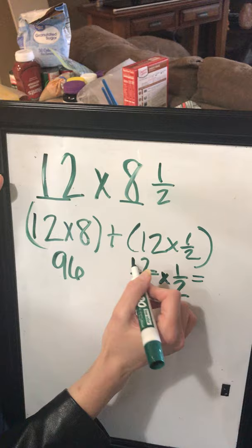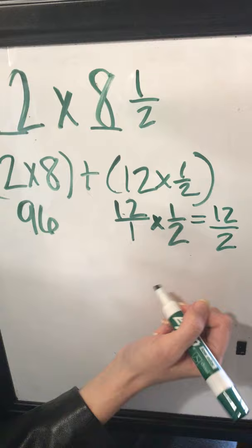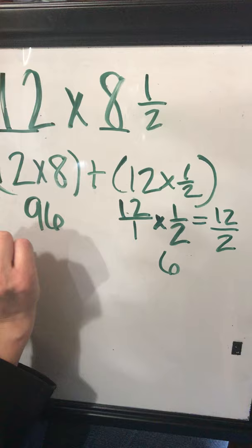With fractions, remember we multiply the numerators: 12 times 1 gives me 12. Multiply the denominators: 1 times 2 gives me 2. So 12 divided by 2 would be 6.